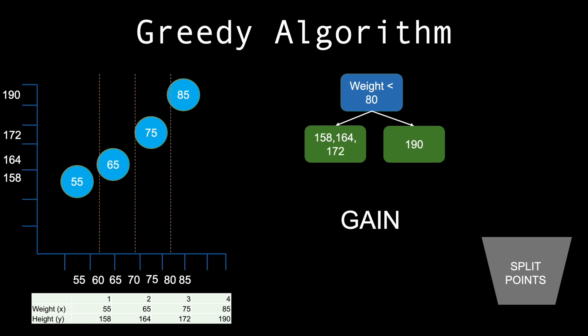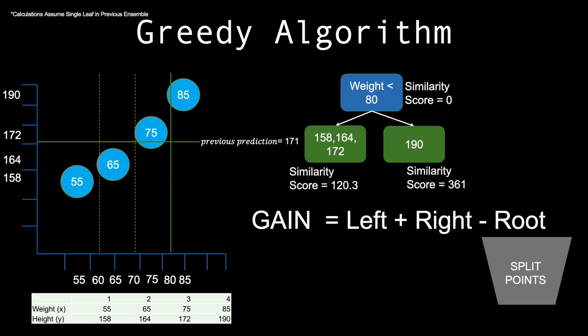Without going into too much detail, we can calculate the gain by using scores from the new leaves and a score from the parent node. This way, we can incorporate our previous predictions into influencing how we construct our tree. We choose the split that results in the highest gain.